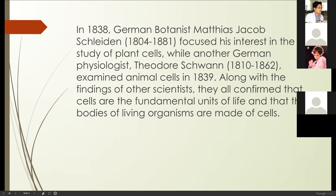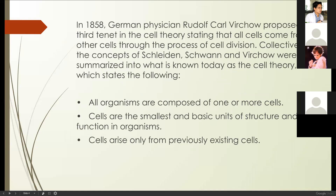If the question asks who studied animal cells under cell theory, it is Theodor Schwann. Along with the findings of other scientists, they confirmed that cells are the fundamental units of life and that the bodies of living organisms are made of cells. Another scientist, Rudolf Carl Virchow, in 1858 proposed a third tenet of cell theory, stating that all cells come from other cells through the process of cell division.